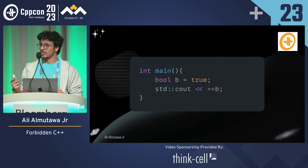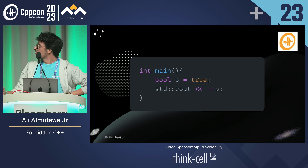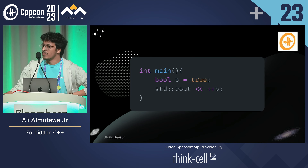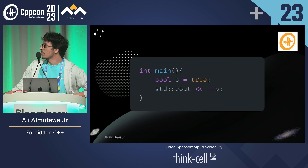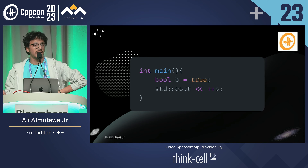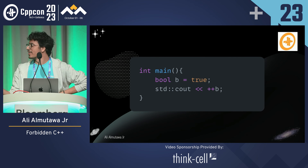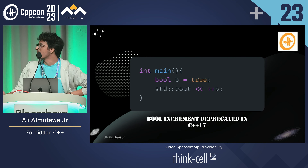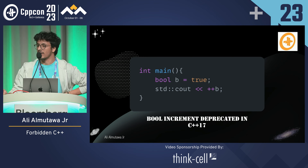Assume C++20. So first of all, we have a boolean b equals true. I'm printing plus-plus b. Does this compile? No — because boolean incrementation got deprecated in C++17.